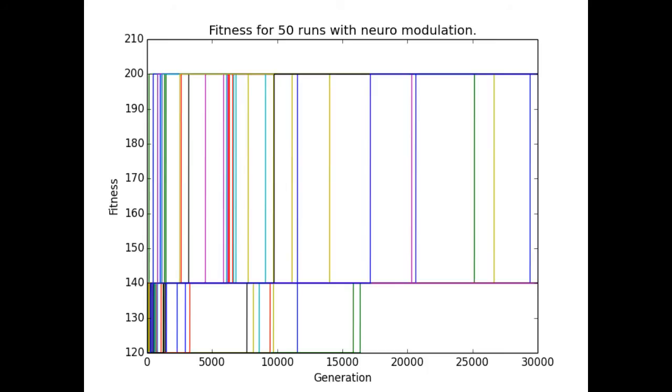Now we look at the fitness for 50 runs of evolution with modulation, and we see many more successful agents.